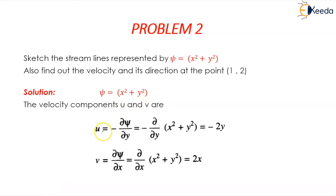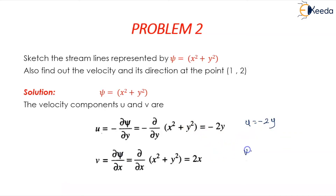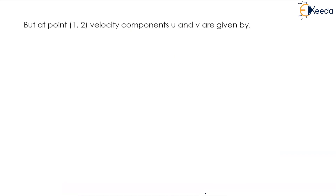So u equals minus ∂ψ/∂y, which means we differentiate x squared plus y squared with respect to y partially, giving u equals minus 2y. Similarly, v equals ∂ψ/∂x, which gives v equals 2x.